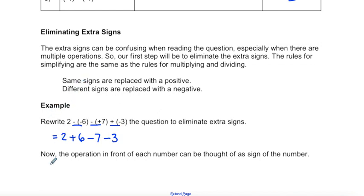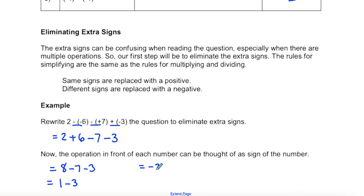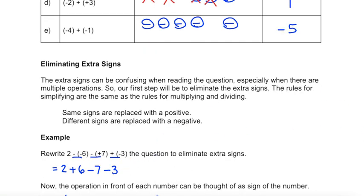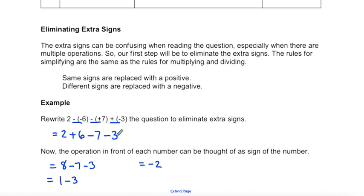To answer this: two plus six is eight, following order of operations left to right. Eight take away seven is one. One take away three — a positive and a negative — gives us negative two. You're welcome to use a calculator, a graphical representation, or a number line to help find your answers. There are lots of ways to solve adding and subtracting negative integers — find a method that works best for you.